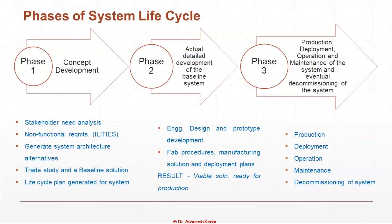The phases of the system life cycle are categorized into three phases. Phase one is concept development: stakeholder needs analysis, non-functional requirements (also called illities), generating system architecture alternatives, trade study, forming a baseline solution, and generating a life cycle plan. Phase two is actual detailed development: engineering design and prototype development, fabrication, manufacturing, and deployment plan. Phase three consists of production, deployment, operation, maintenance, and eventual decommissioning of the system.